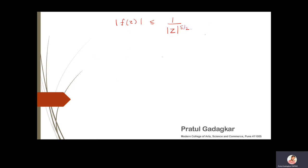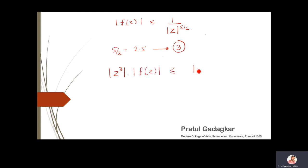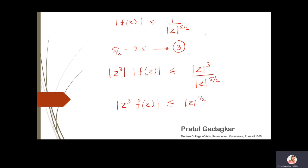The standard trick here is to note that 5/2 = 2.5, and the next integer greater than 2.5 is 3. So we multiply both sides by |z³|, and we get |z³ f(z)| ≤ |z|^(1/2).